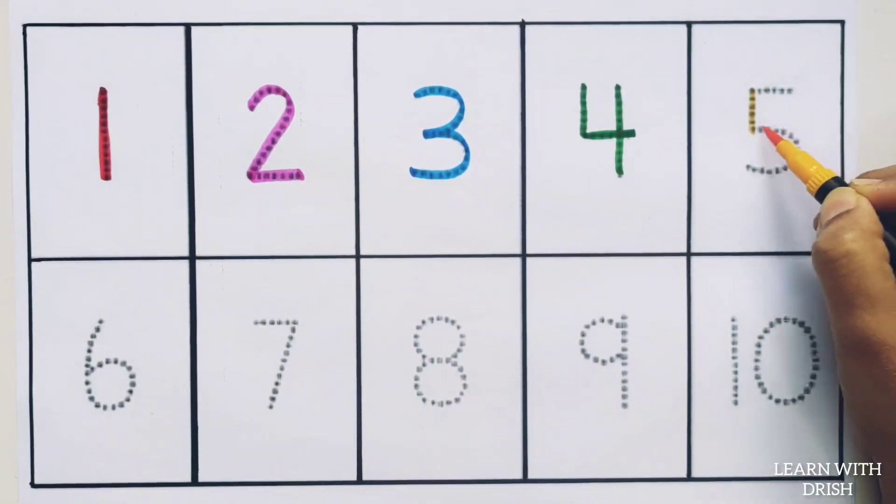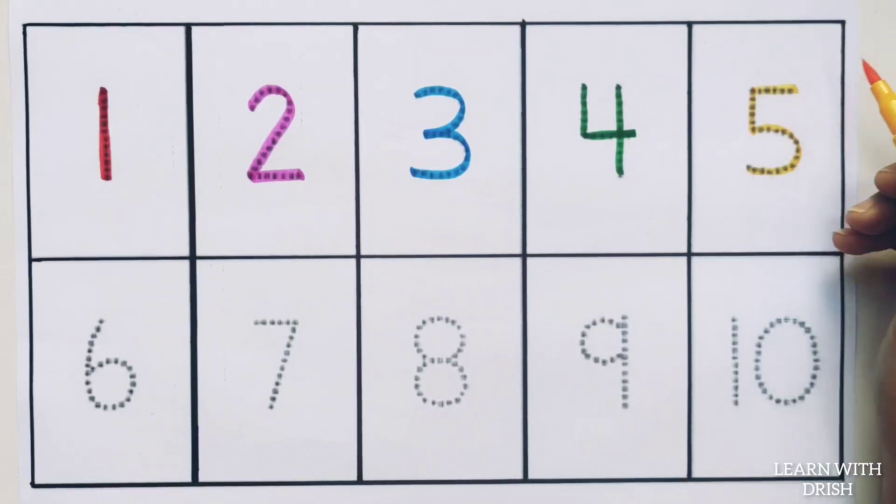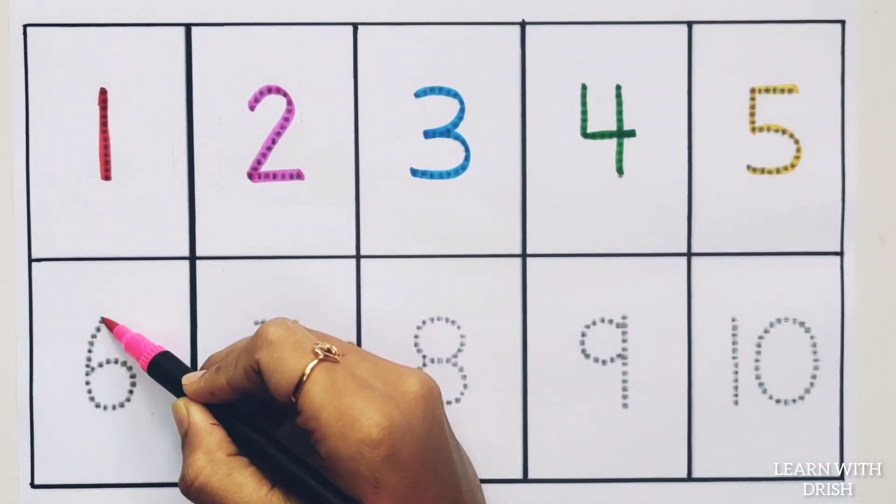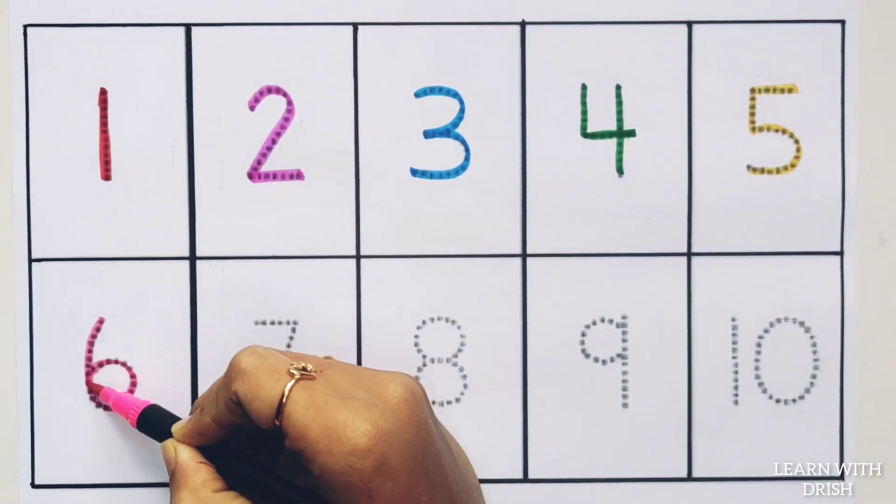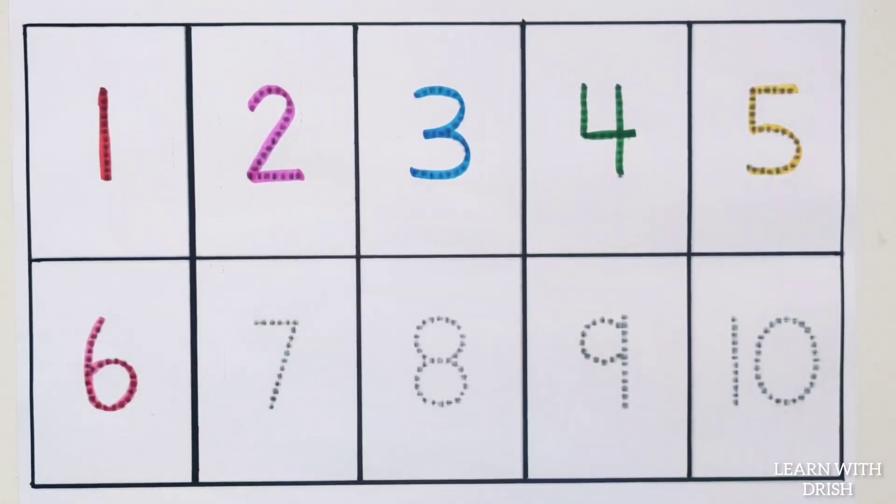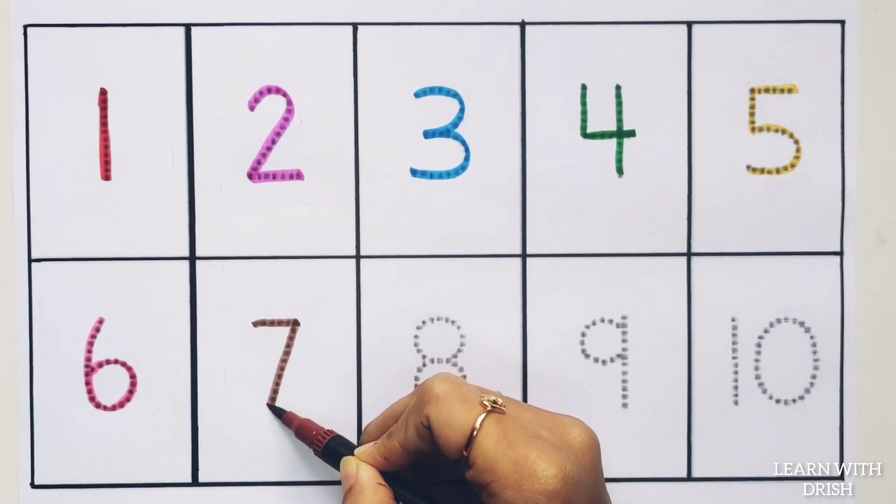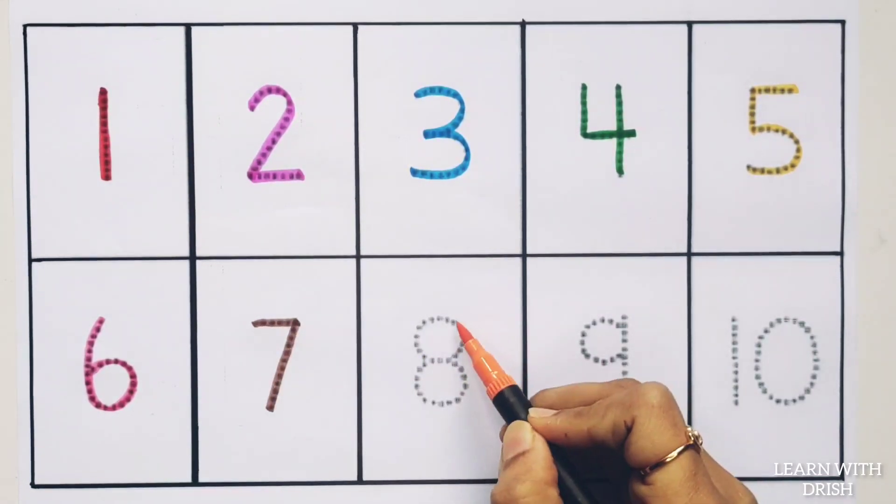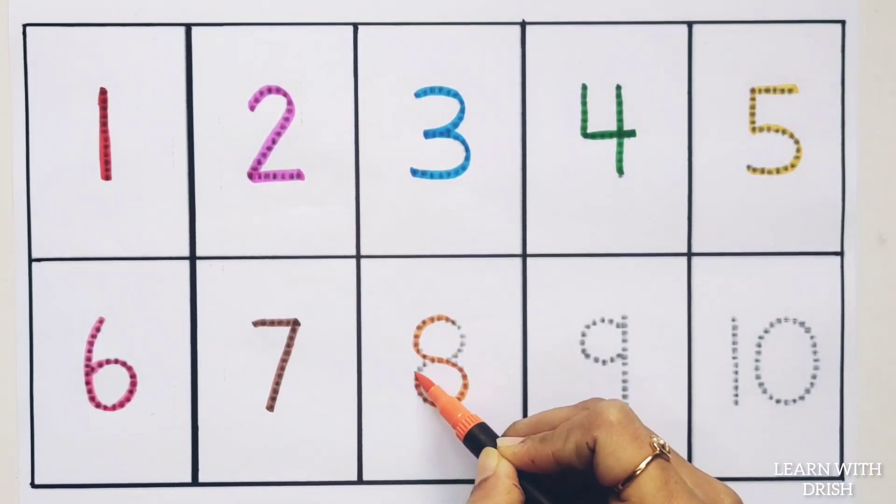Five, F-I-V-E, five. Six, S-I-X, six. Seven, S-E-V-E-N, seven. Eight, E-I-G-H-T, eight.